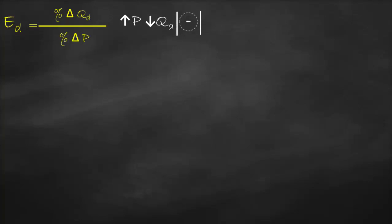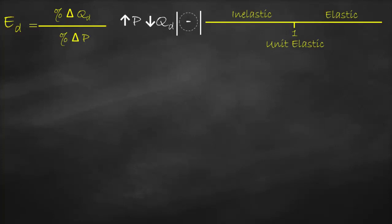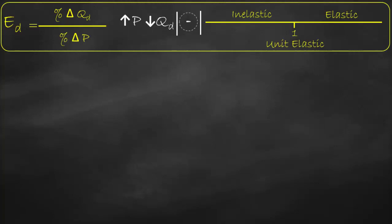Our benchmark for price elasticity of demand is one. If price elasticity of demand equals one, it's unit elastic; bigger than one, it's elastic; lower than one, it's inelastic. The second type of elasticity is price elasticity of supply, which uses exactly the same formula but with quantity supplied instead of quantity demanded.